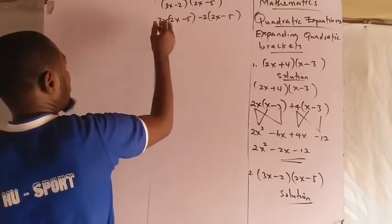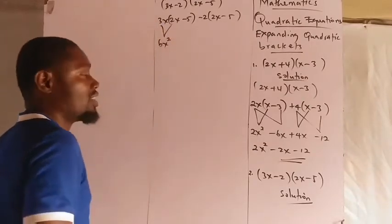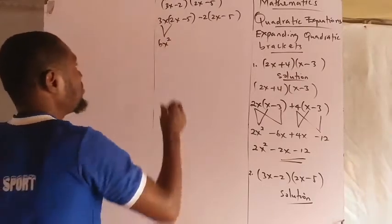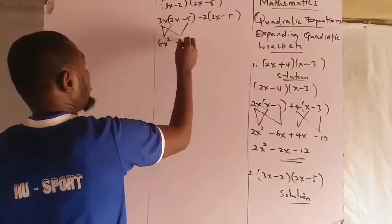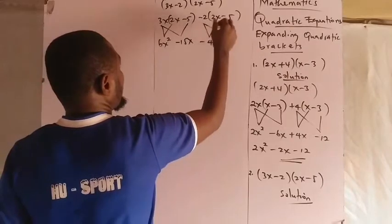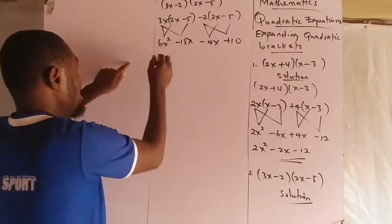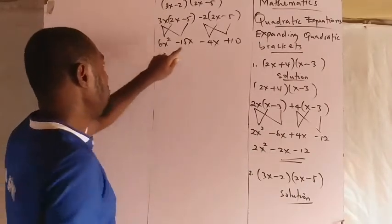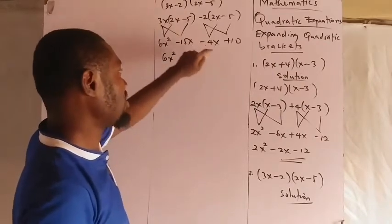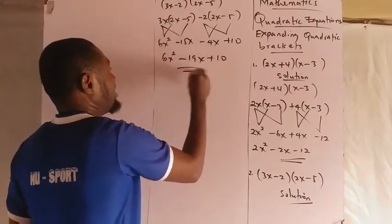Let's expand. 3x times 2x gives us 6x squared — 3x times 2 is 6 and x times x is x squared. Then 3x times minus 5 is minus 15x, and minus 2 times 2x is minus 4x. Minus 2 times minus 5 is plus 10. So we have 6x squared minus 15x minus 4x plus 10. There are two negative x terms: giving out 15x and 4x means giving out 19x altogether, so the result is 6x squared minus 19x plus 10.